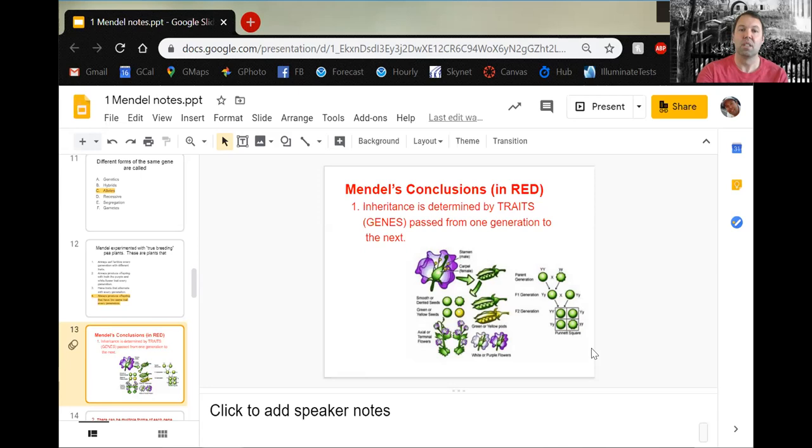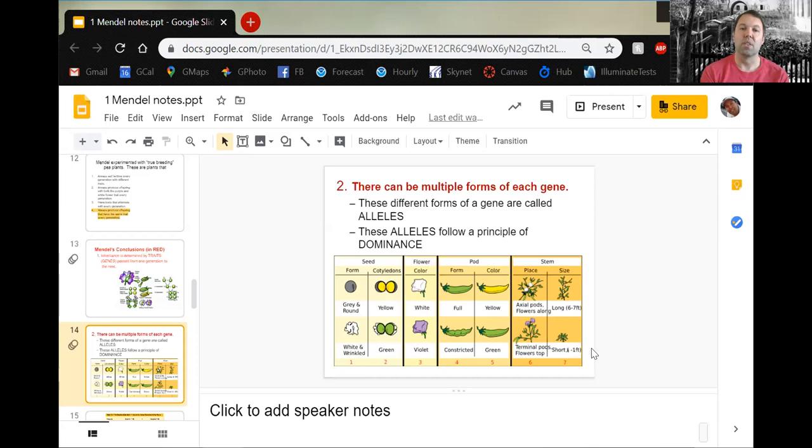Number two, we have different forms of each gene. They could be tall and short, purple or white, green or yellow, smooth or constricted. And then a subcategory here would be the principle of dominance. One gene is always going to be dominant. It's going to hide or mask the other recessive trait of their gene. That's called the principle of dominance.